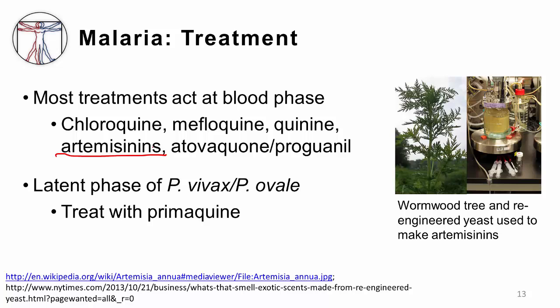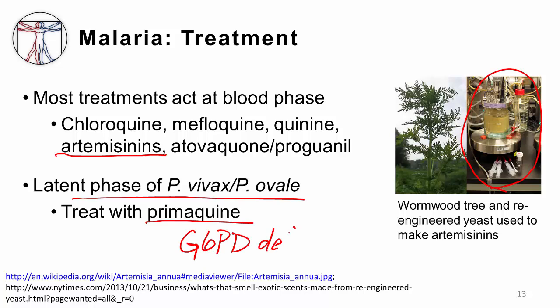The artemisinins were actually derived from the wormwood tree, which was originally discovered in China. But it was hard to make a large amount of the drug from the tree, and ultimately scientists were able to engineer yeast, as you can see in this image, to make the artemisin. This has allowed for a less expensive and larger supply of the medication. One more time, I'll remind you that the latent phase of plasmodium vivax and ovale requires a separate treatment, which is primaquine. Primaquine cannot be given to patients who have G6PD deficiency, and you need to do testing ahead of time so you won't give it to someone with G6PD deficiency and have them develop severe hemolysis.